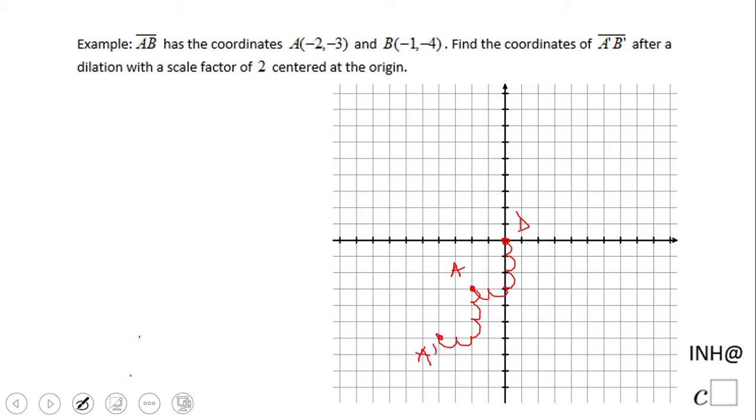Let's do the same for point B. Let me put the point back. Point B has coordinates (-1, -4). So we move one left and four down - one, two, three, four. Right here is point B.